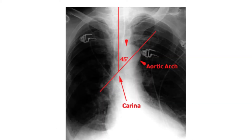Another way to find the carina is called the D-way. You find the arch of the aorta and draw a line inferiorly and medially to midline at a 45-degree angle — that gives you the carina. Even without that line, you can see the left main stem here and the right main stem here, confirming the location.